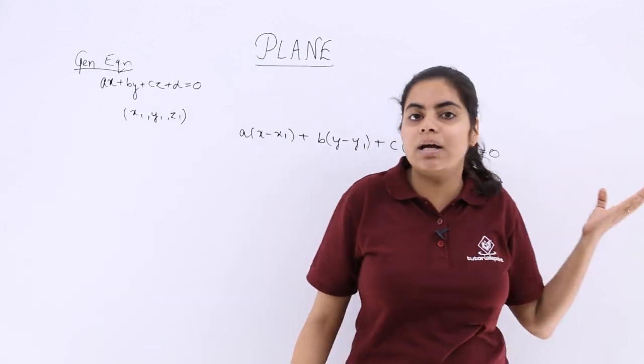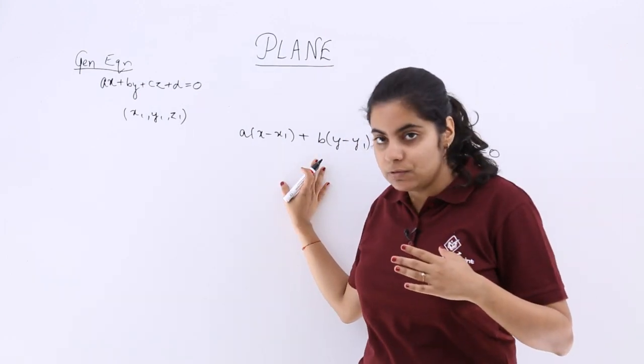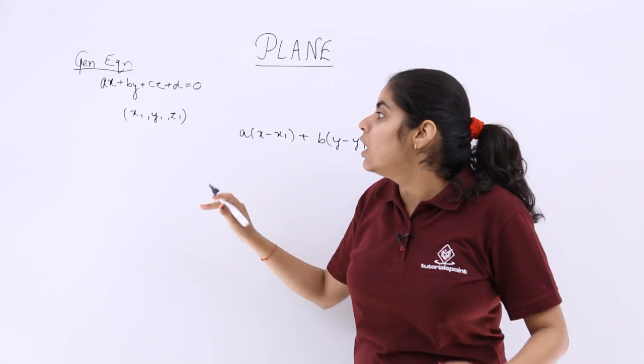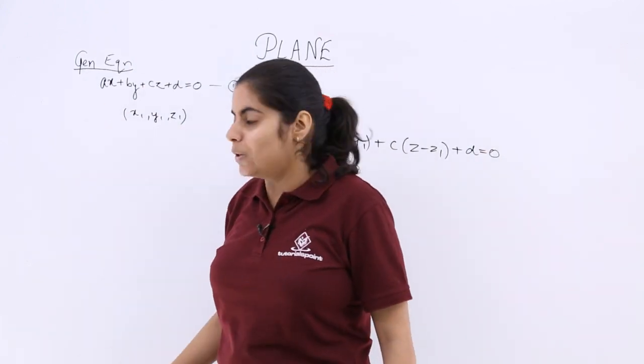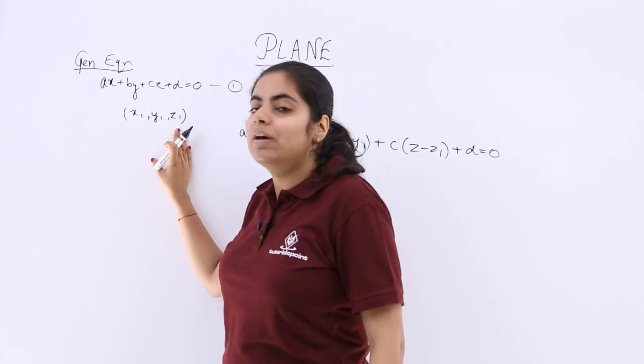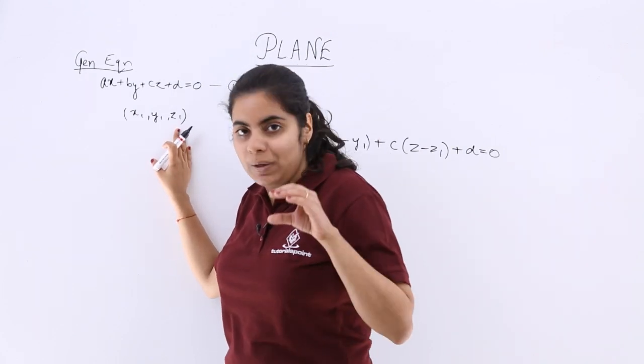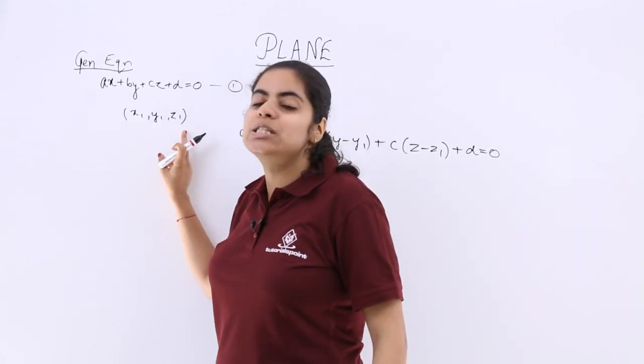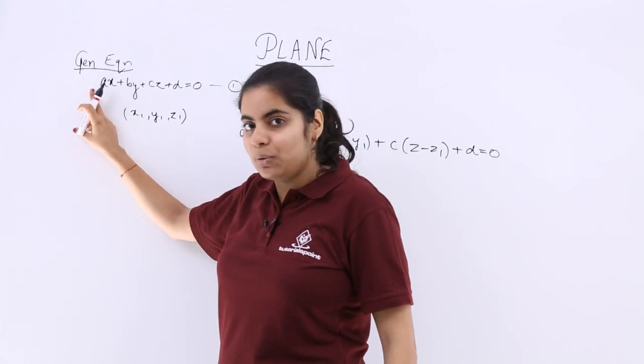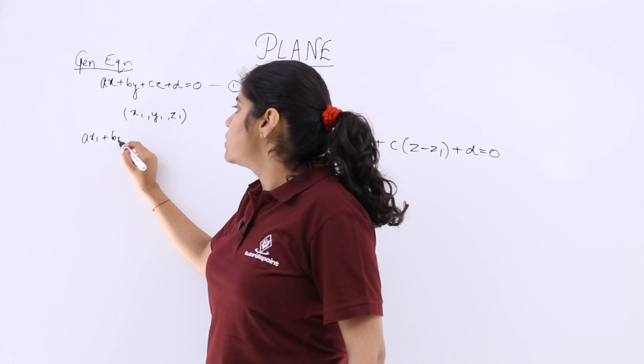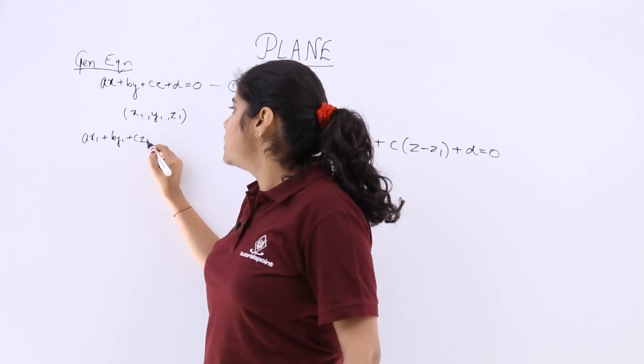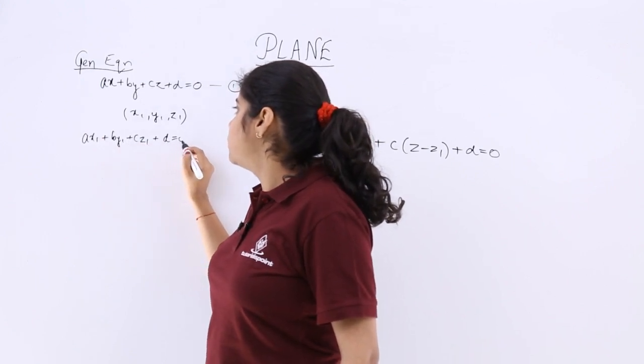Now how come this equation has been derived? It has been derived from the above equation. This can be named as equation number 1, which is the general equation. When you have x1, y1, z1 on the plane only, so definitely this point will also satisfy the above equation. So you can always put this because it satisfies.